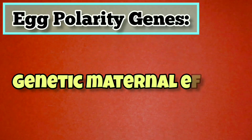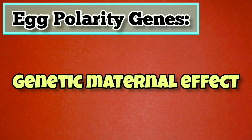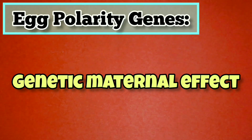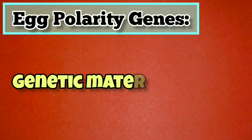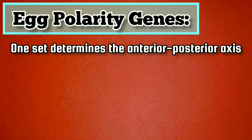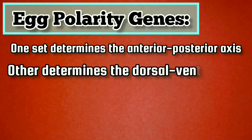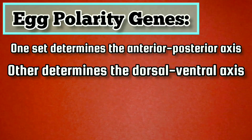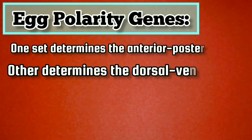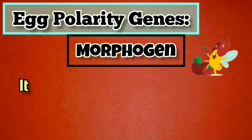Because the mRNAs of the polarity genes are produced by the female parent and influence the phenotype of the offspring, the traits encoded by them are examples of genetic maternal effects. There are two sets of egg polarity genes: one set determines the anterior-posterior axis and the other determines the dorsal-ventral axis. These genes work by setting up concentration gradients of morphogens.